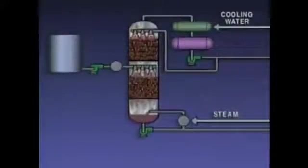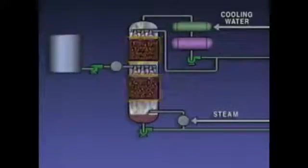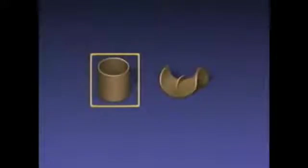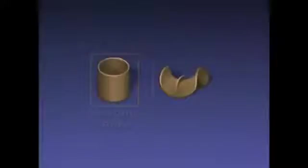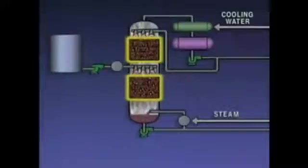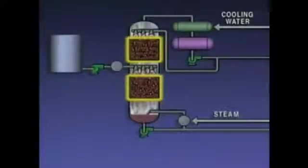Another type of tower, a packed tower, contains layers of devices called packing instead of trays with bubble caps. There are many different types of packing. Some towers have sections that are filled with cylindrical rings like the rashig ring. Another type of packing is known as a burl saddle. The packing breaks up the liquid so that it flows over a large amount of surface area. This exposes more of the liquid to the vapors and increases heat transfer from the vapors to the liquid.